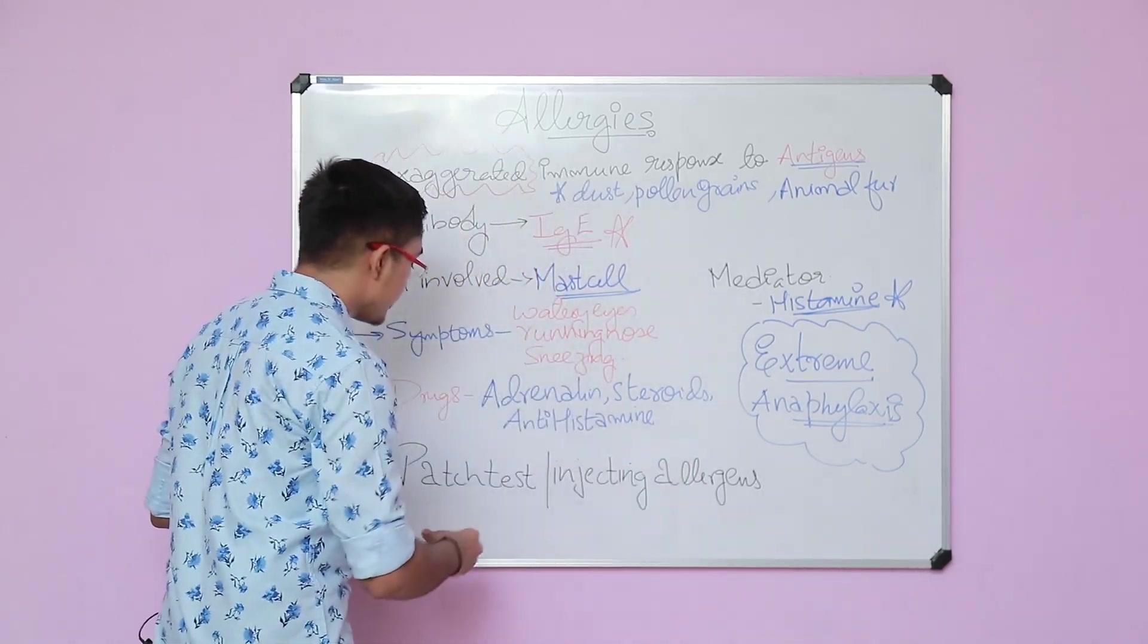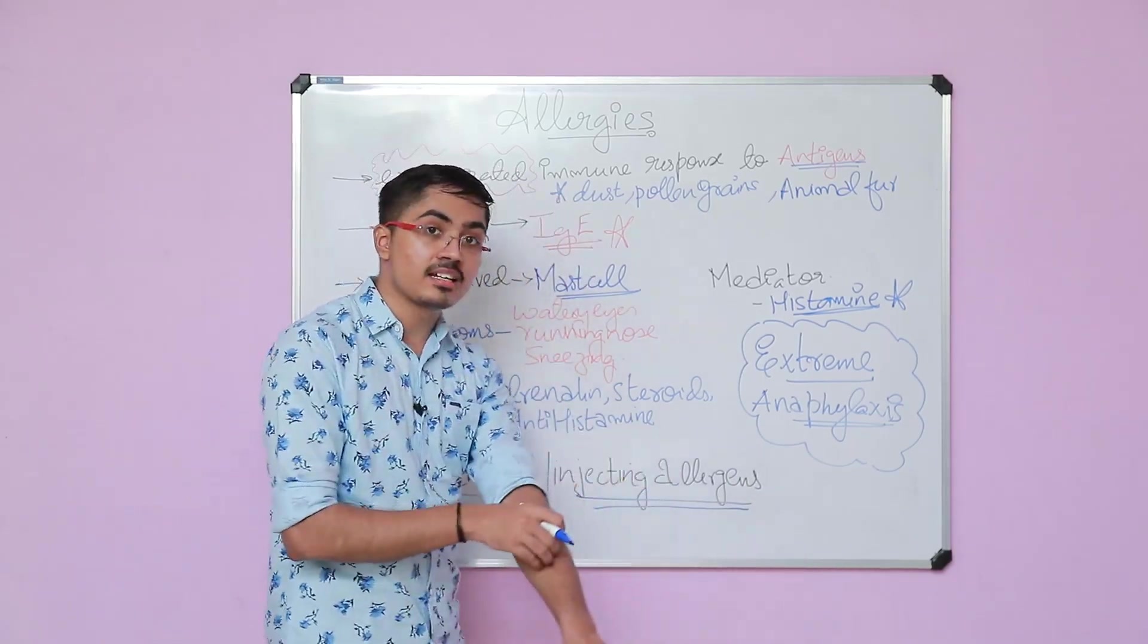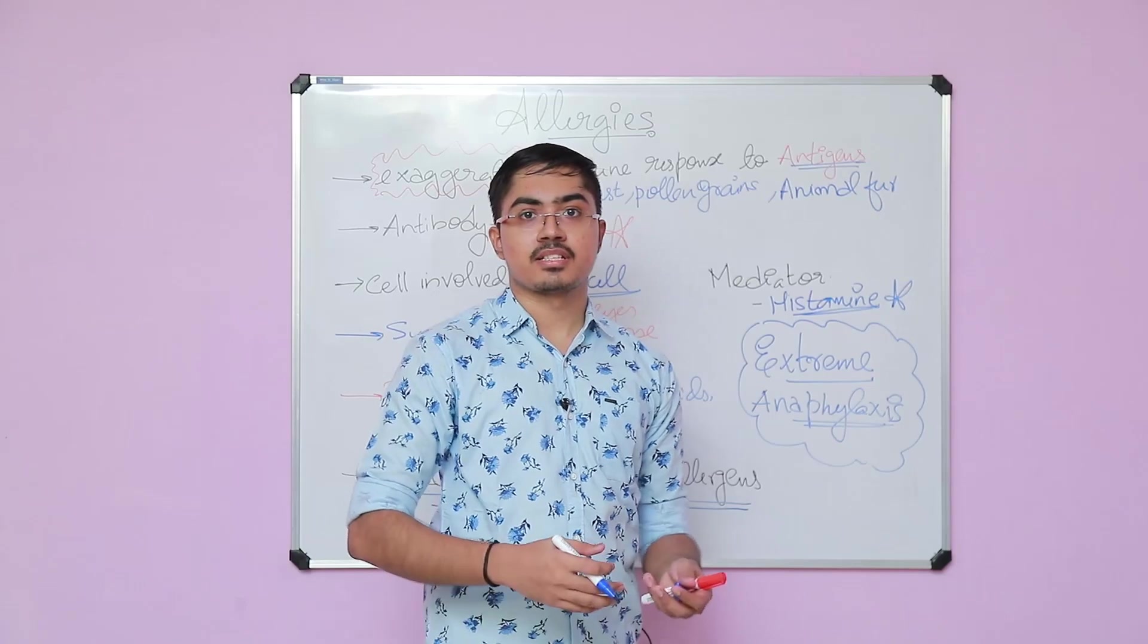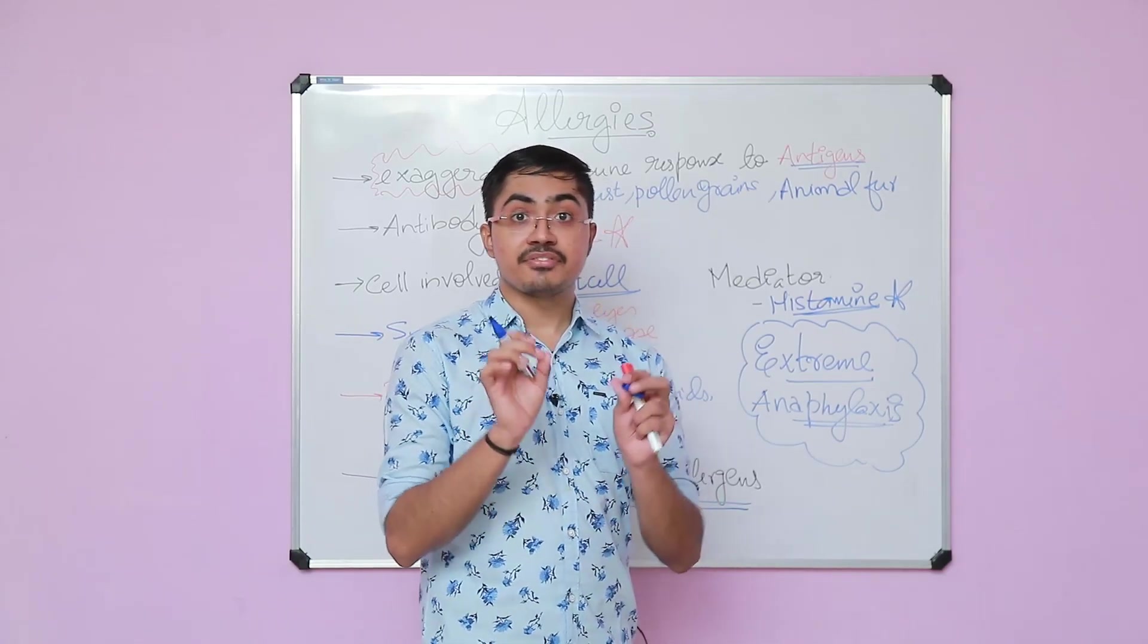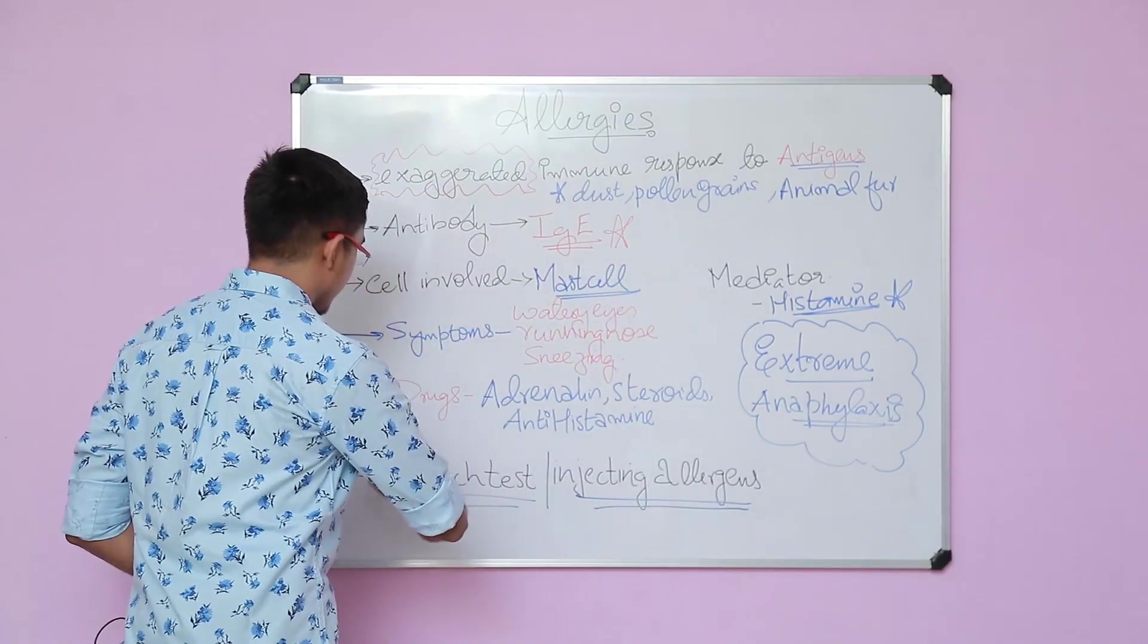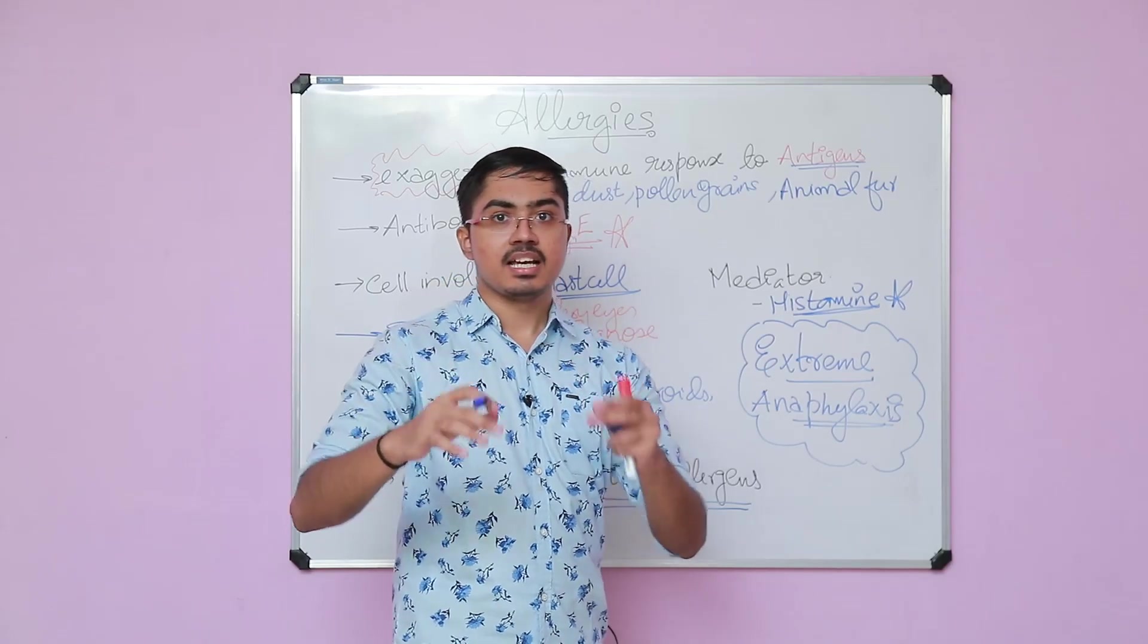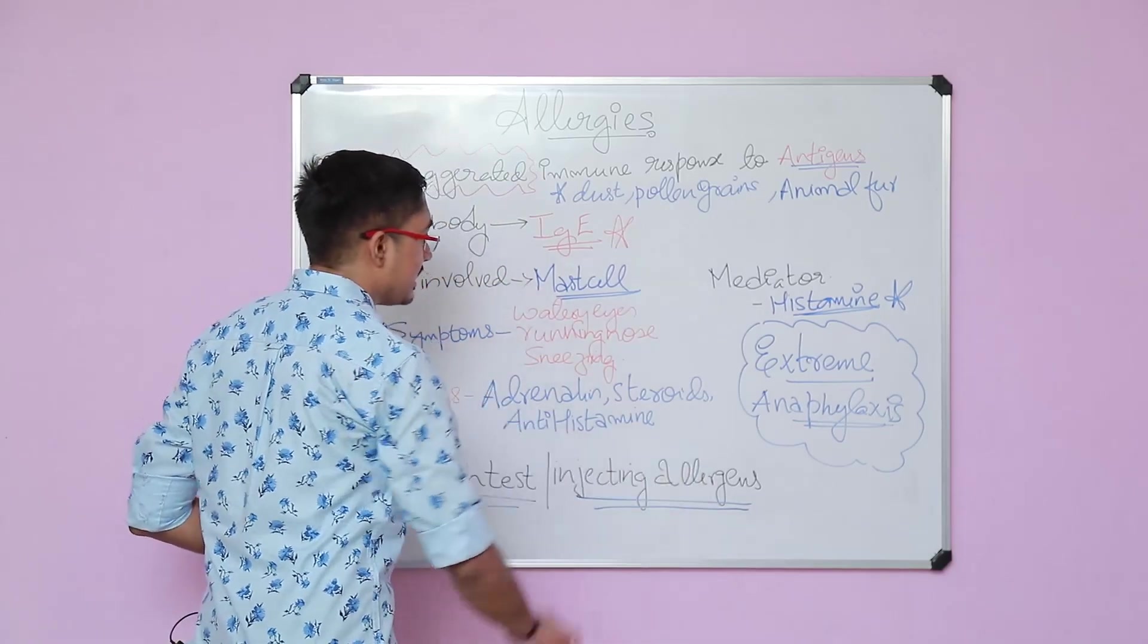We need to test whether a person is allergic to a substance or not. This is done by patch tests and injecting allergens. If you inject the allergens into the body, over the arm, we inject a very mild amount of that allergen and see the patient after some 4 days to check whether there are any symptoms. If present, we can say the person is allergic. You can have a patch test also. You have a patch stuck over the back that contains a lot of allergens on it. You wait for 4 days and get the result.